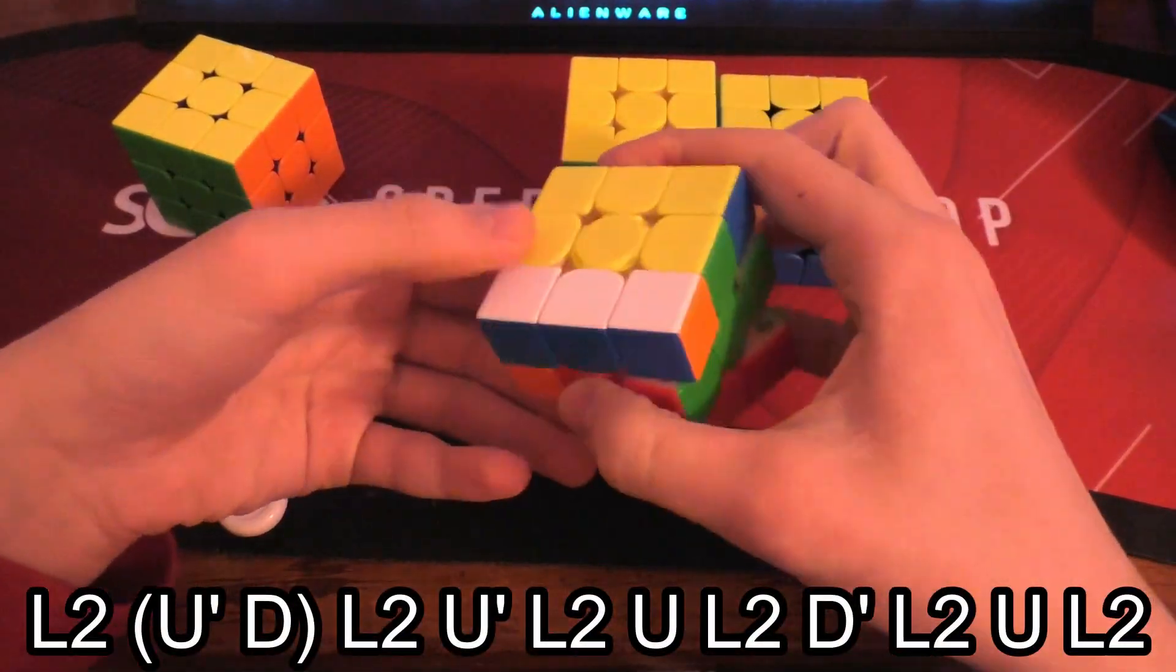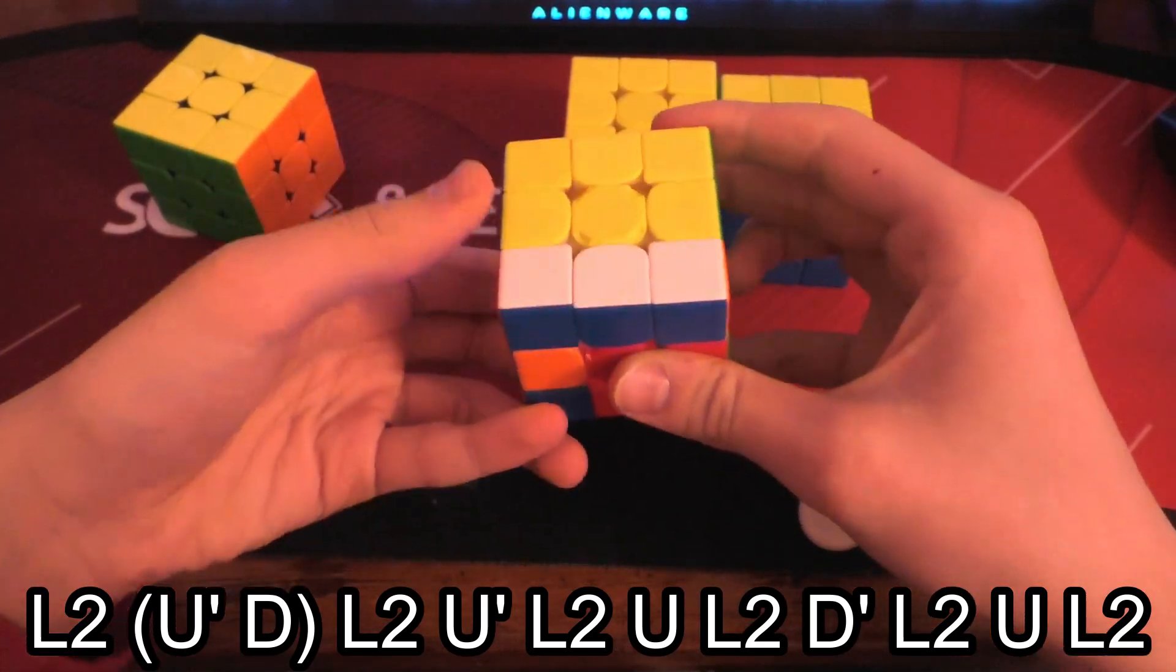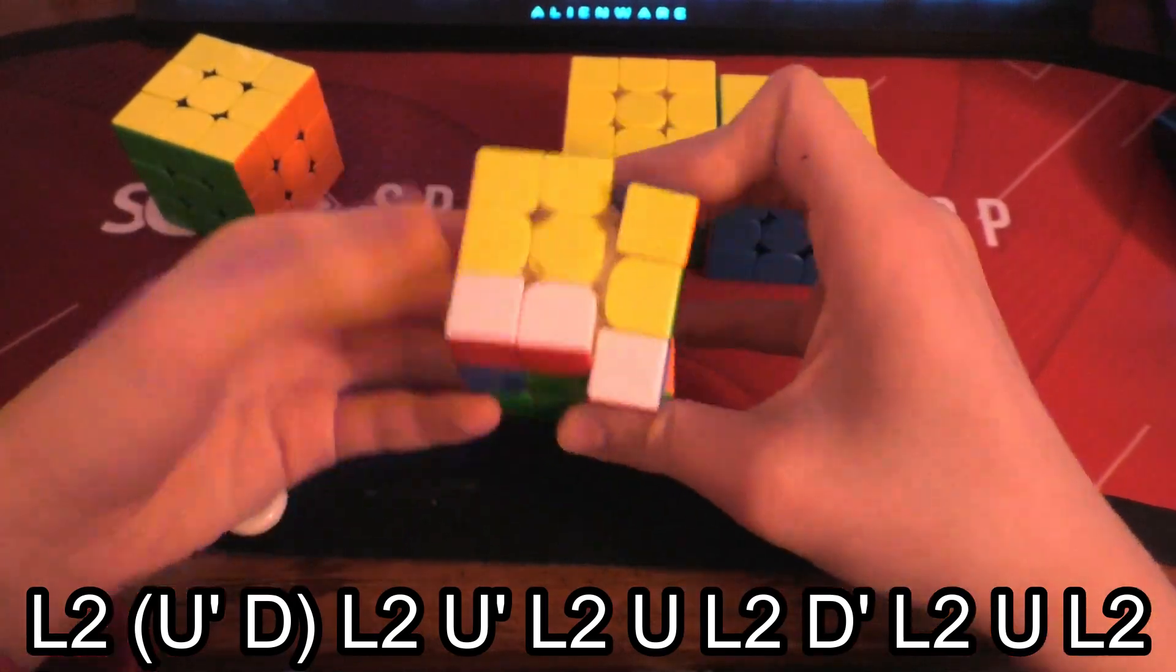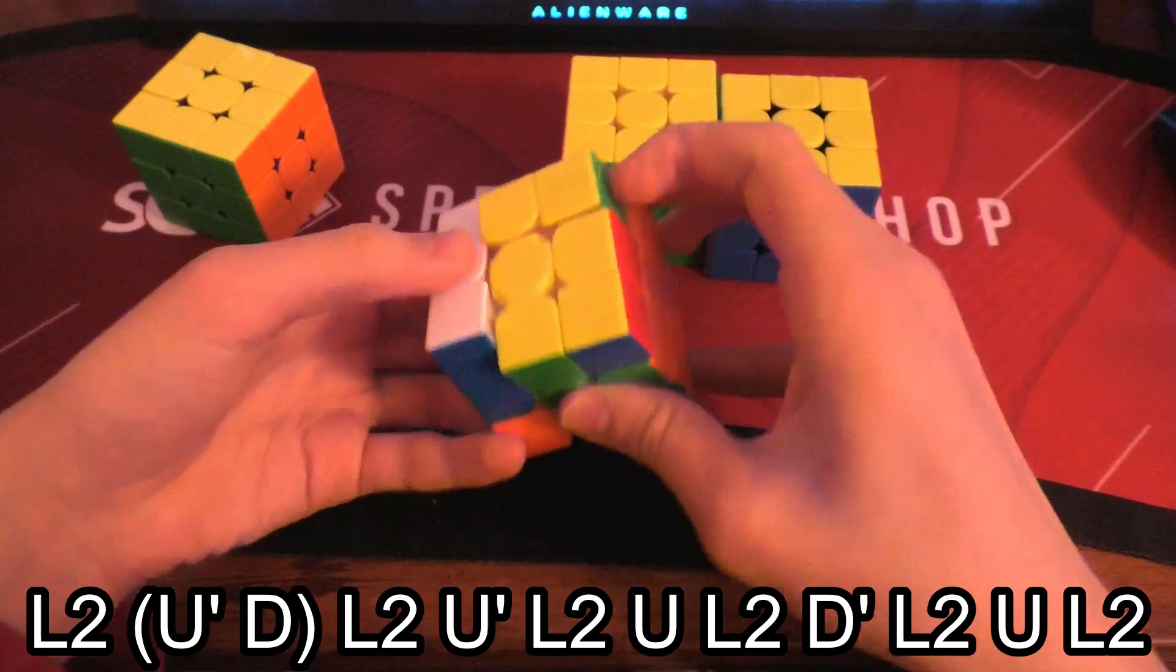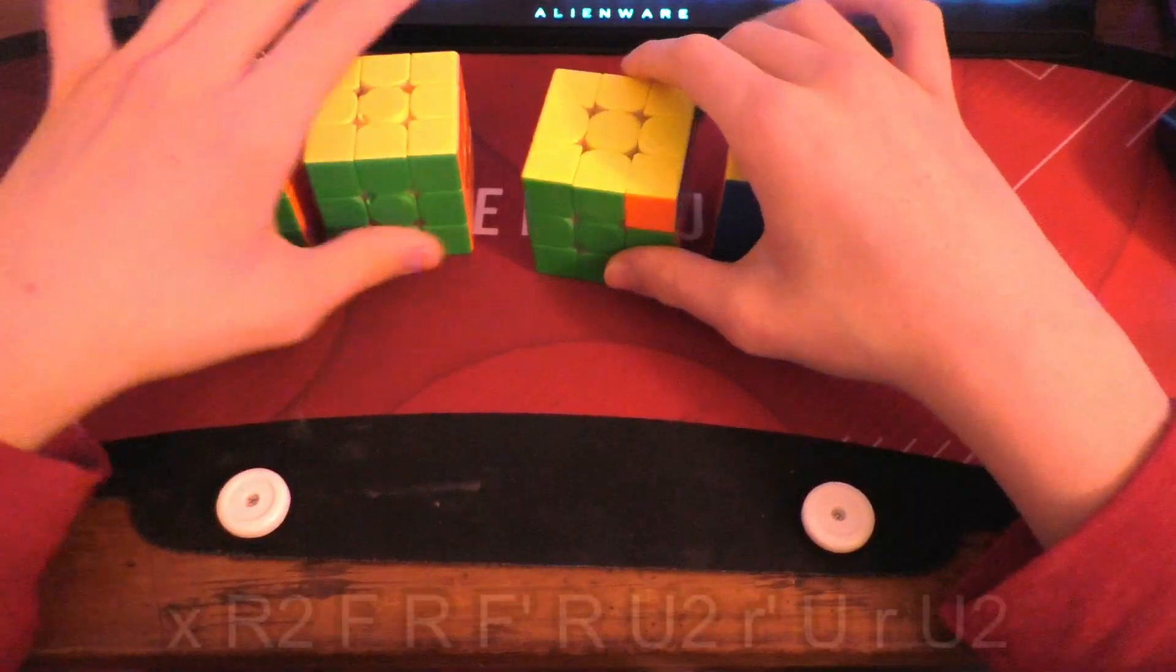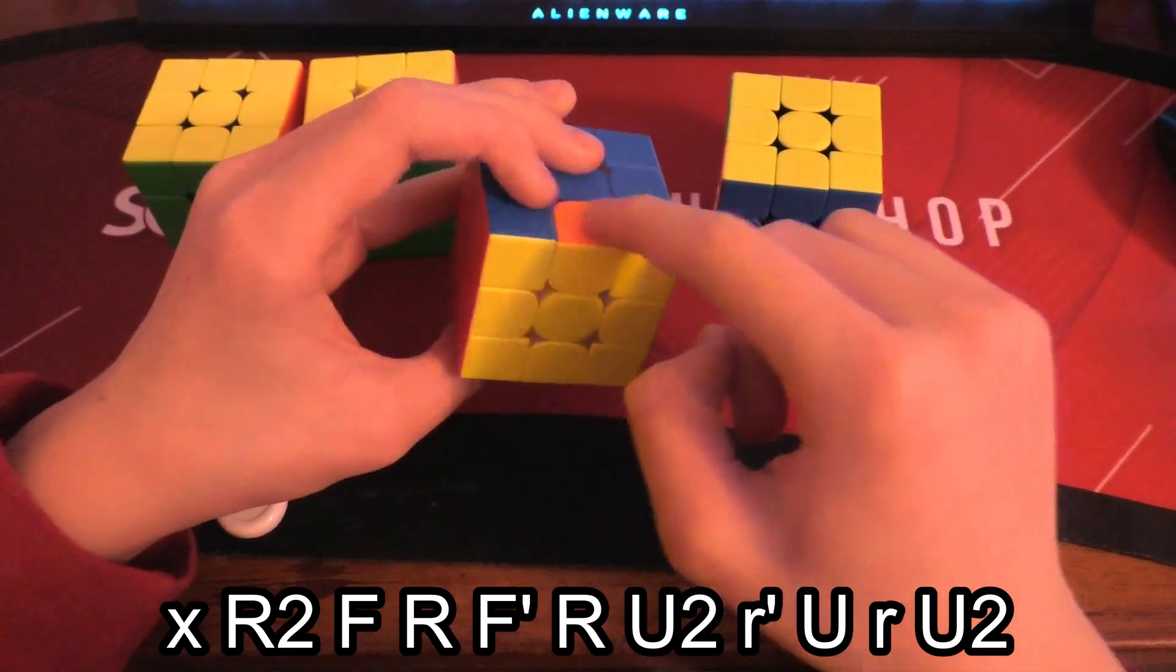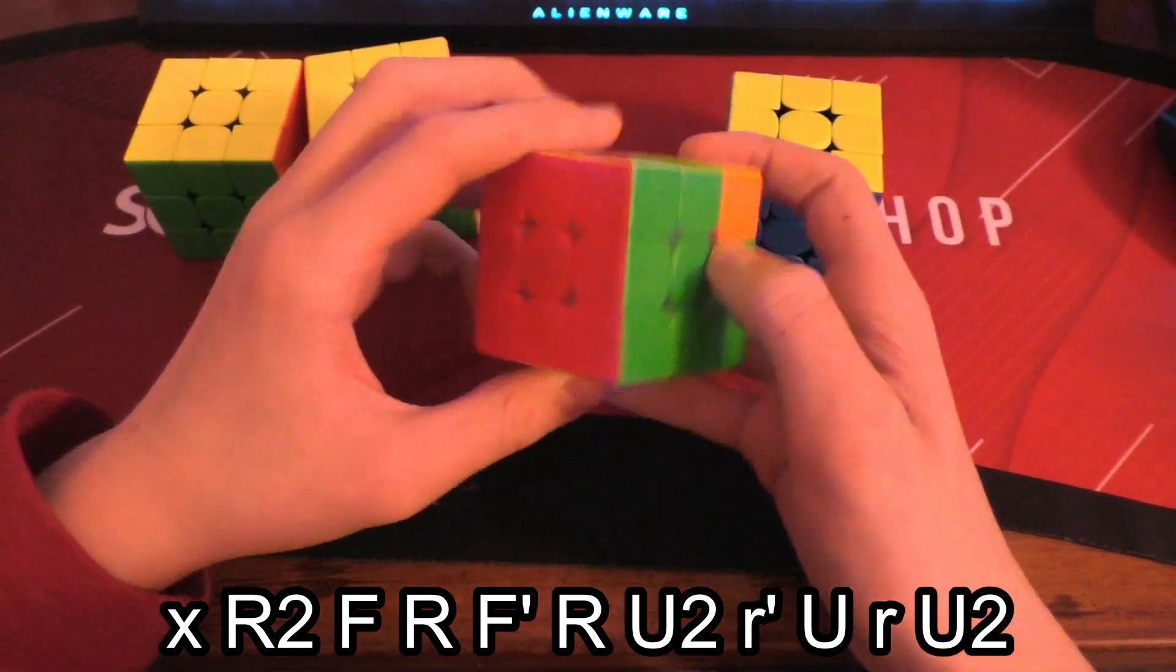Moving on to the next case, we have the JA perm from this angle with the solved bar at the back and the JA perm right there. These two pieces need to swap with these two pieces, obviously. So here is the algorithm.